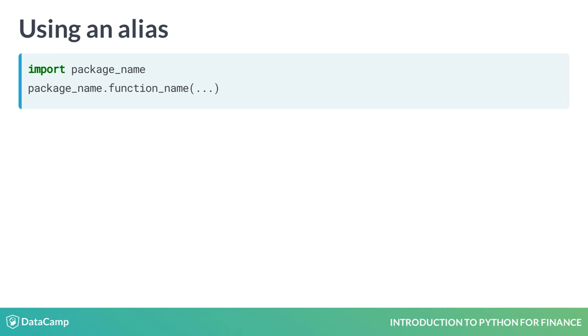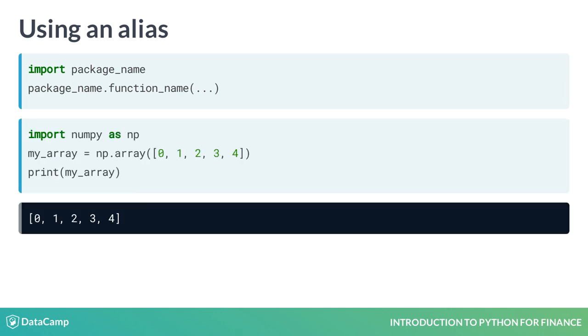For example, you can use the np alias for numpy by using the command import numpy as np. Now you can access all the functions from numpy using np.function_name.